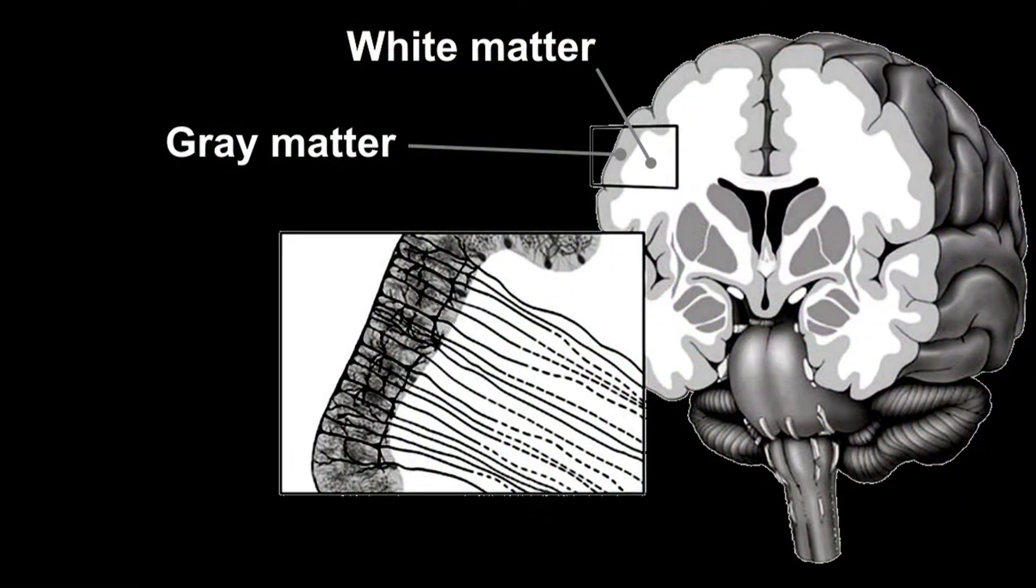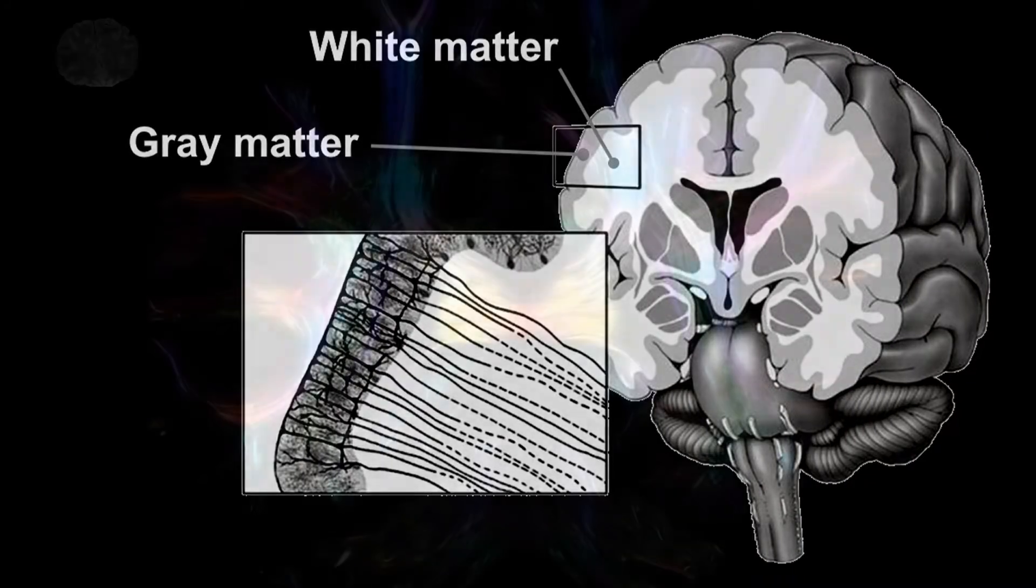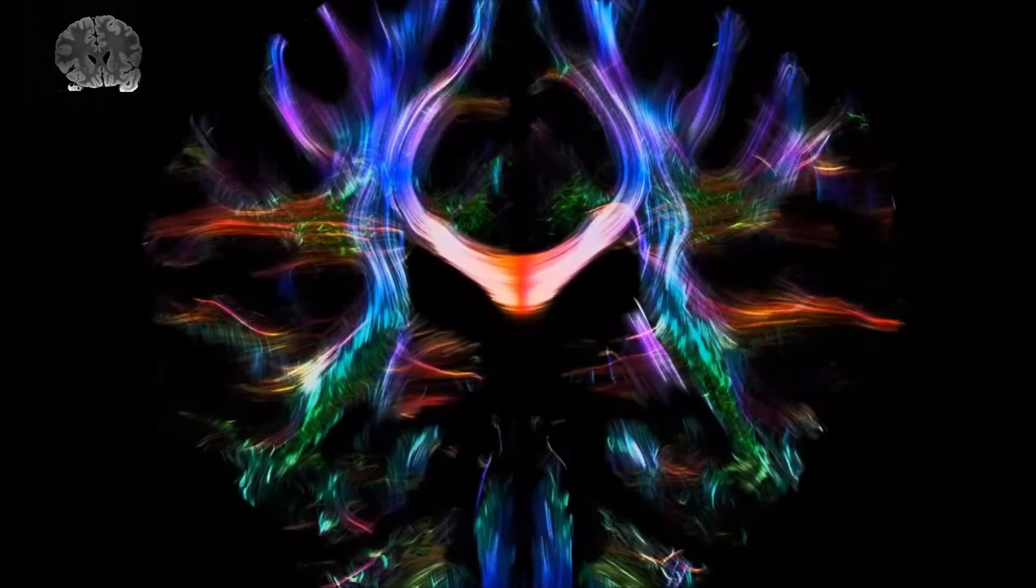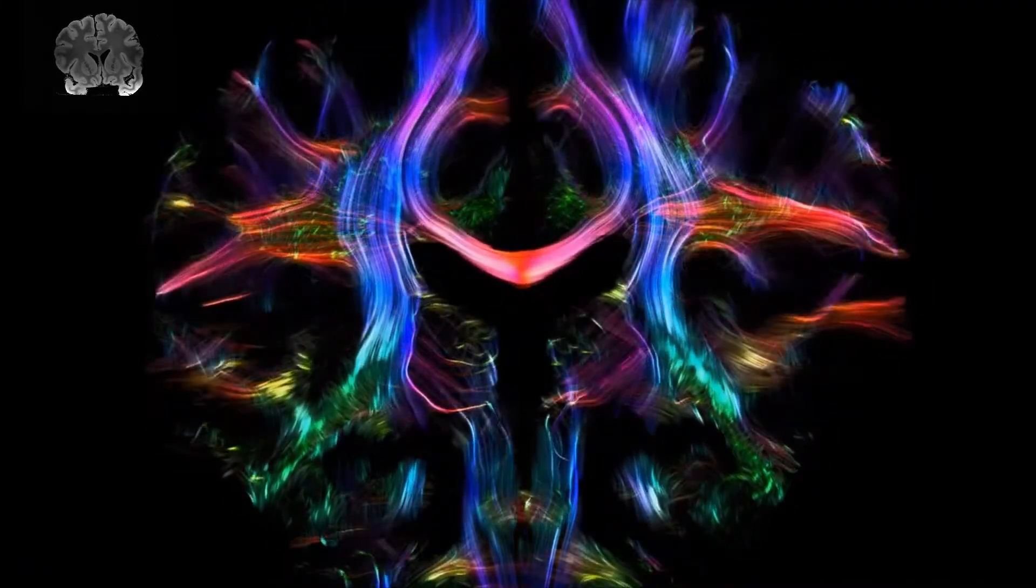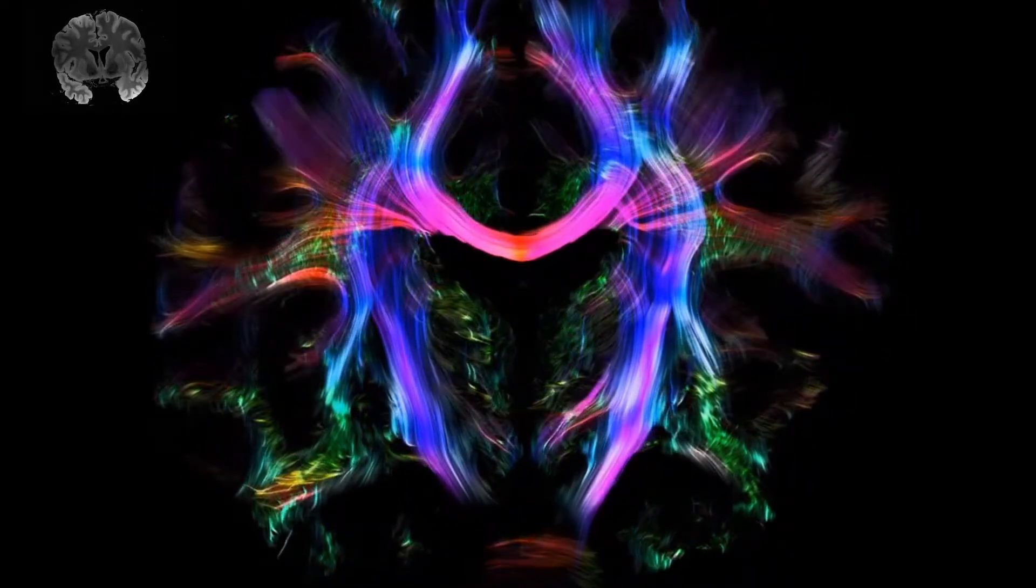The white matter tissue of the brain contains axons which form the connections between neurons. Making a map of these white matter fibers allows for understanding which areas in the brain are strongly connected. Consequently, this gives an idea from where to where information is flowing in the brain.